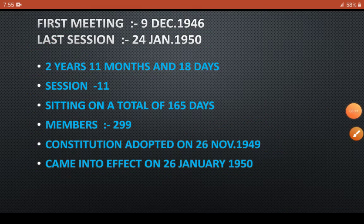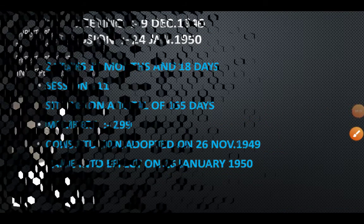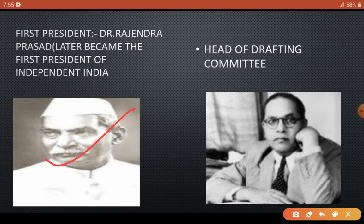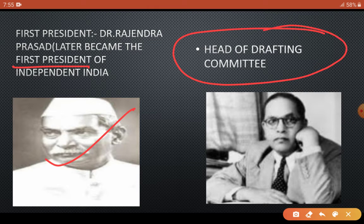Now let's talk about the key members. The first President of the Constituent Assembly was Dr. Rajendra Prasad, who also later became the first President of independent India. The head of the Drafting Committee was Dr. Bhimrao Ambedkar.